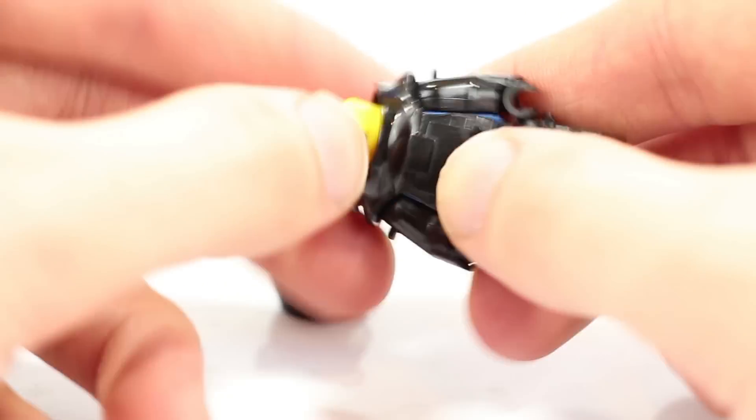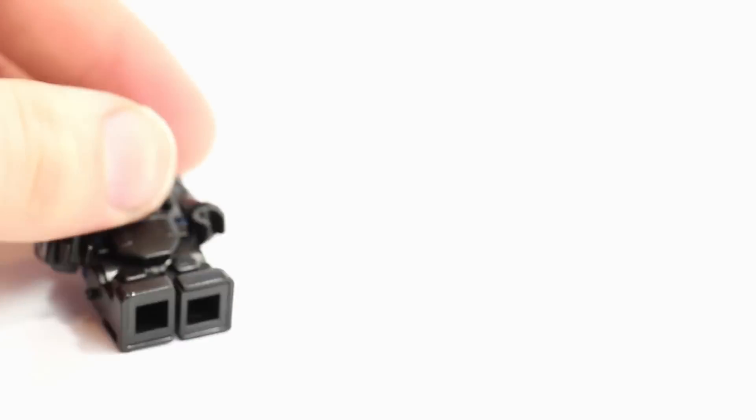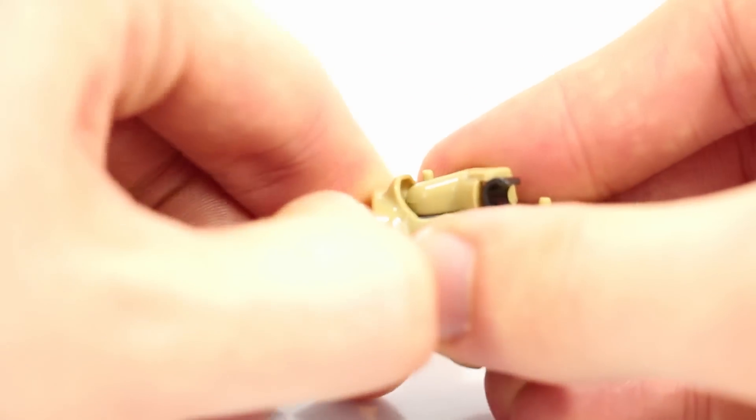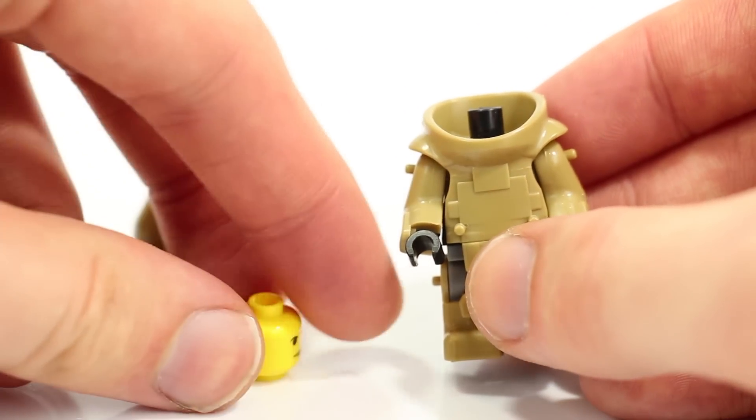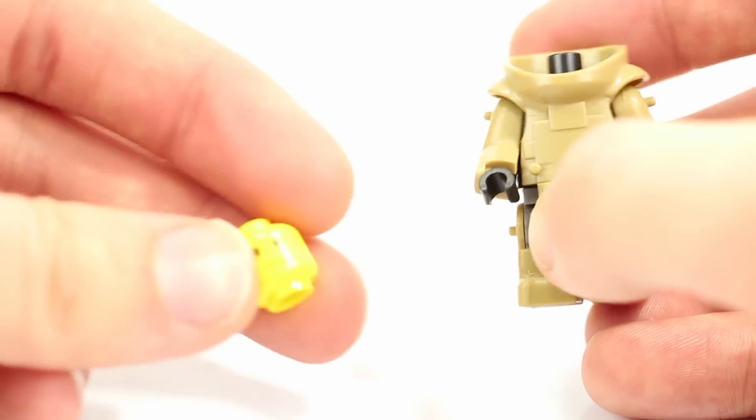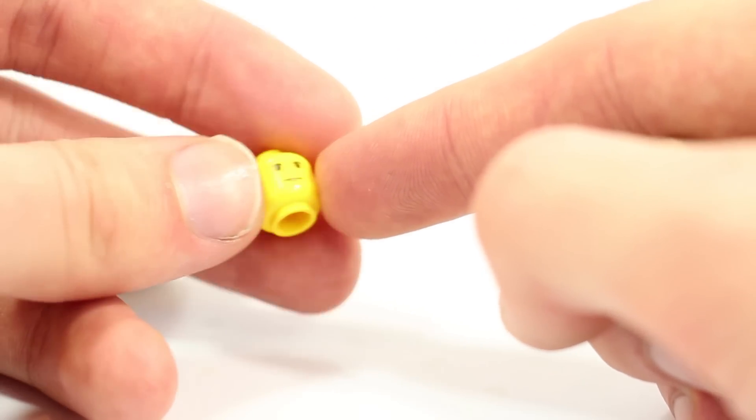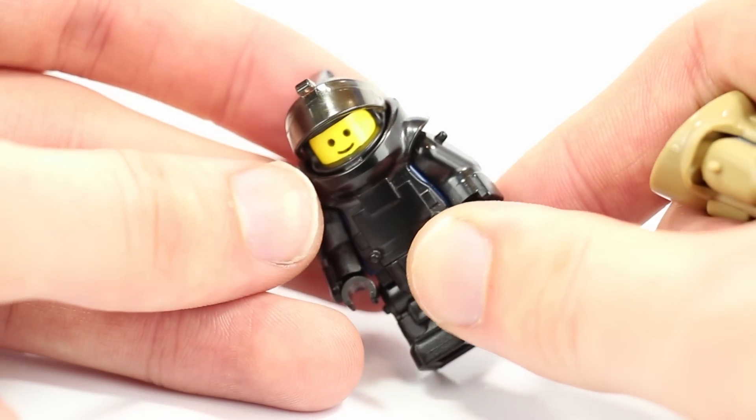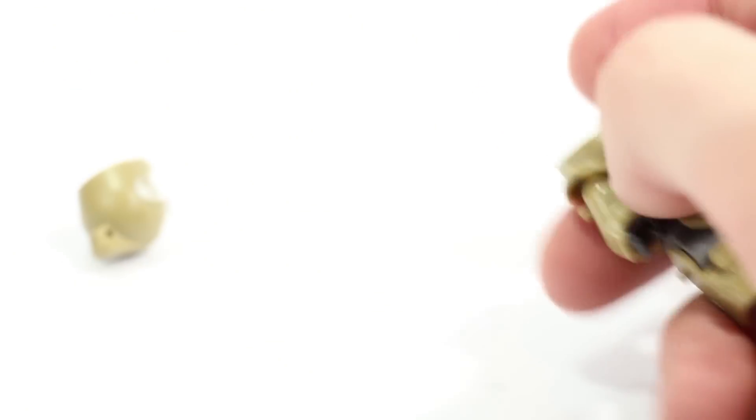Let's go ahead and take the dark tan one apart. So you got the helmet and the head. The dark tan one that I sell actually comes with a custom printed face, kind of just a neutral face. So that's actually custom printed. The black one I sell comes with just a generic LEGO smiley face just because I thought it looked kind of cool and funny in there.